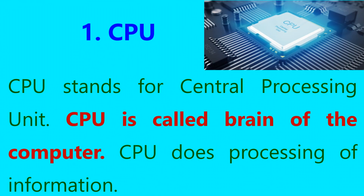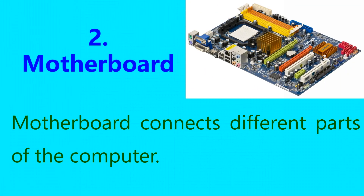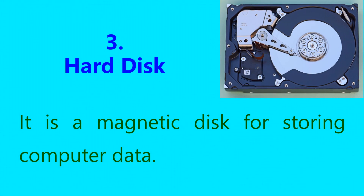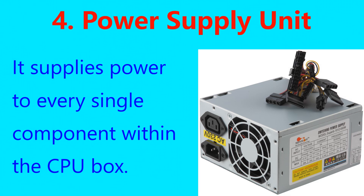CPU stands for Central Processing Unit. The CPU is called the brain of the computer. The motherboard connects different parts of the computer. The hard disk is a magnetic disk for storing computer data.